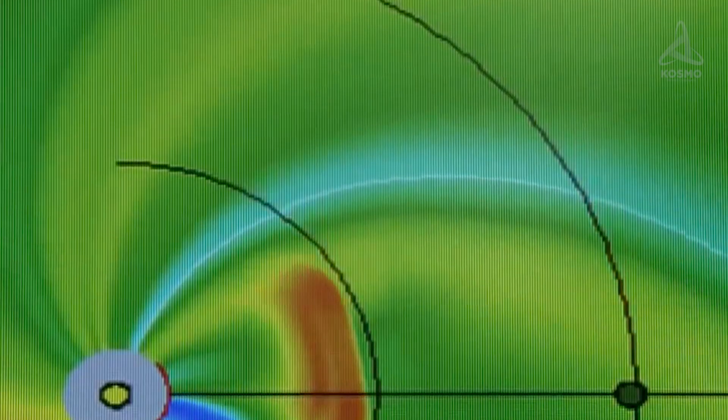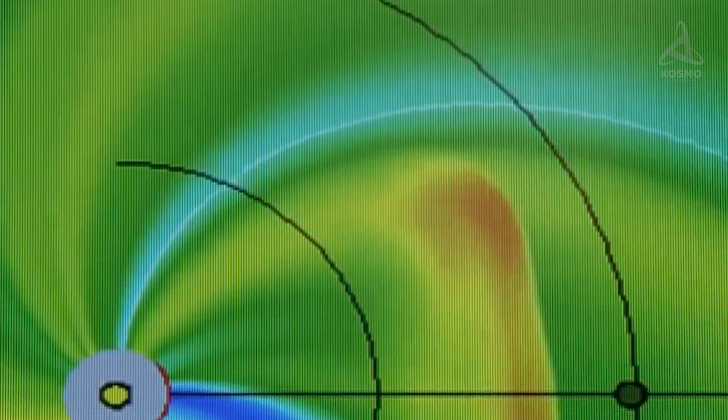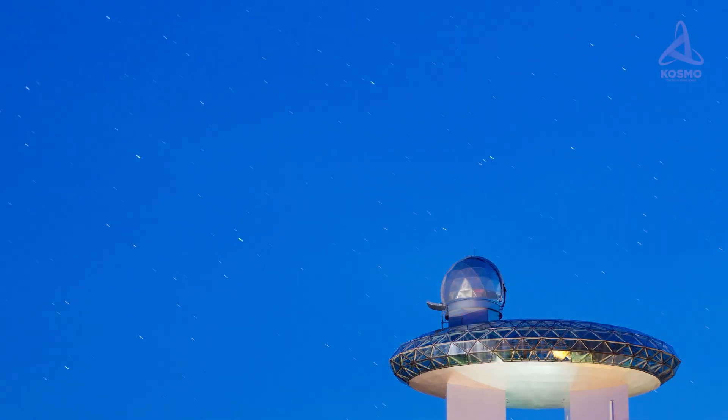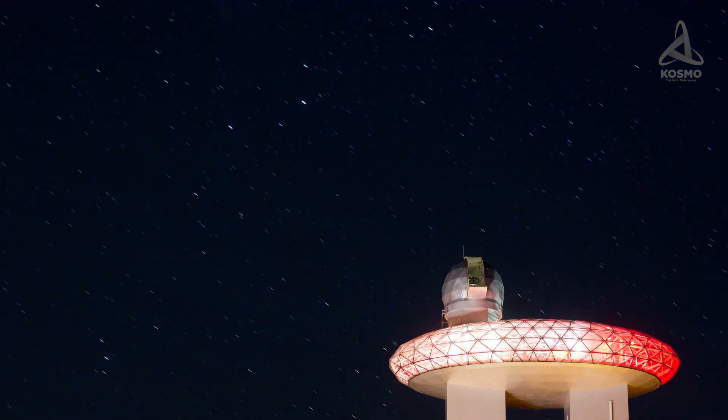At first, it was mistaken for the optical counterpart of the X-ray source GX3 plus 1. However, further observations revealed that there were two completely different objects.